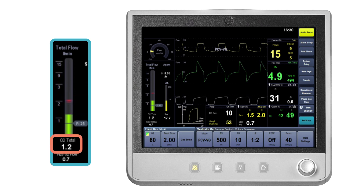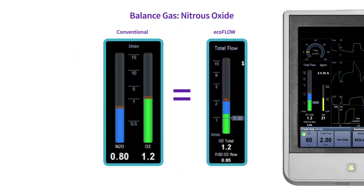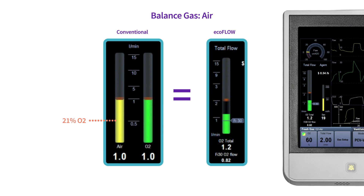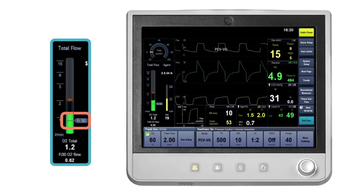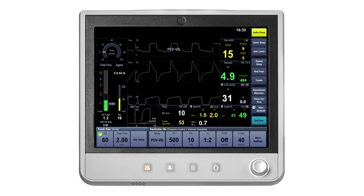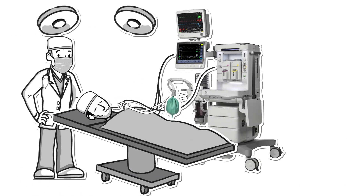Below the flow tube is the numerical display of the total oxygen content in the fresh gas flow. If nitrous oxide is the balanced gas, the numeric O2 total equals the set O2 flow. If air is the balanced gas, the numeric O2 total equals the set O2 flow plus 21% of the air flow rate. The FiO2 marker is a graphical representation on the flow tube showing the minimum O2 flow that is needed to maintain a preset inspired oxygen value. Below the numeric O2 total flow is the FiO2 total flow, which indicates the lowest oxygen flow needed within the total fresh gas flow to maintain a minimum FiO2 based upon the FiO2 flow marker value.